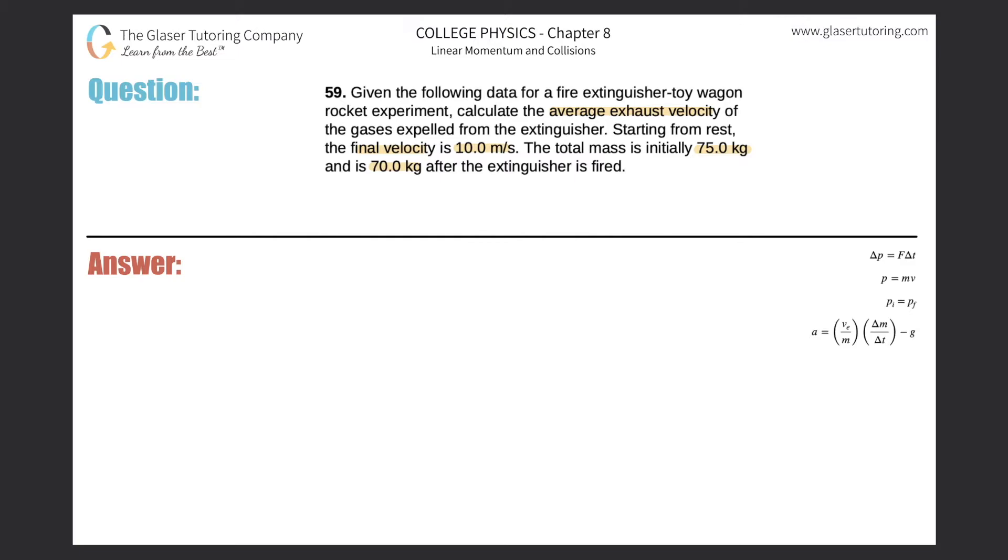Alright. So basically, this formula comes right from the text. We can basically write the final velocity will be equal to the exhaust velocity multiplied by the natural log of the initial mass divided by the final mass.